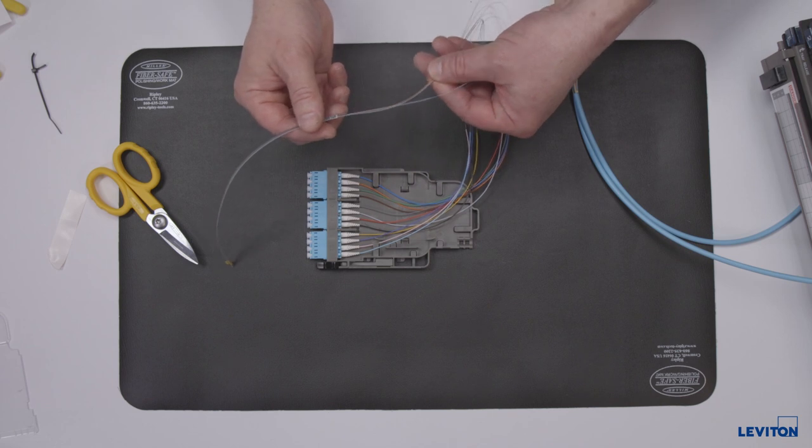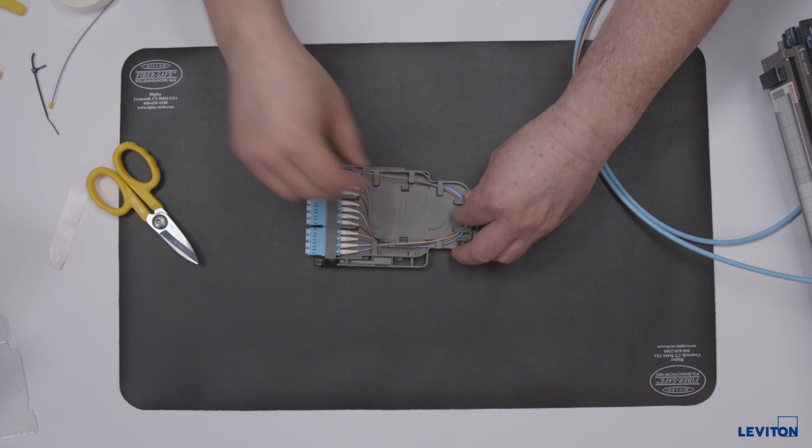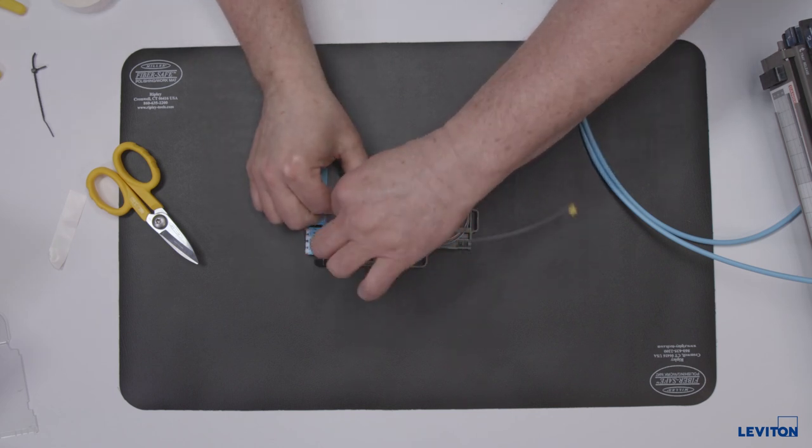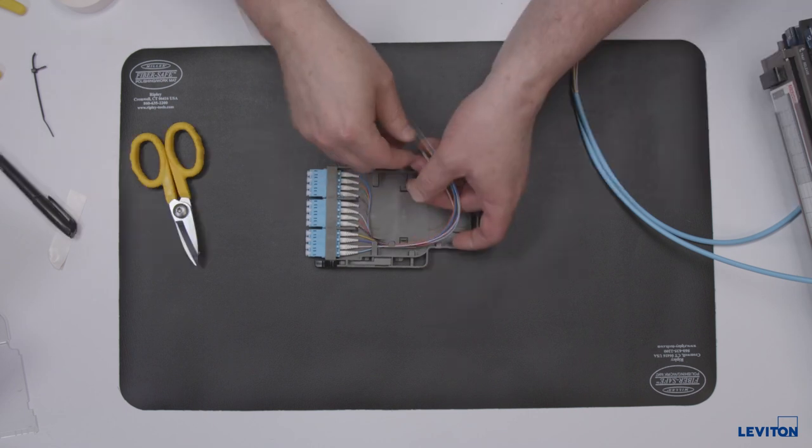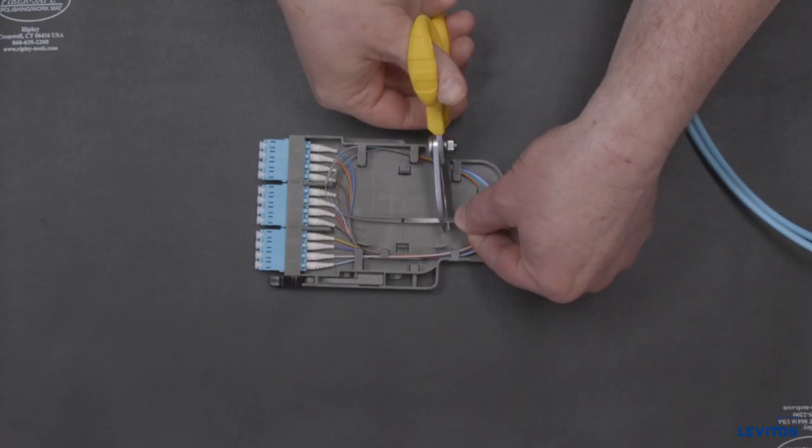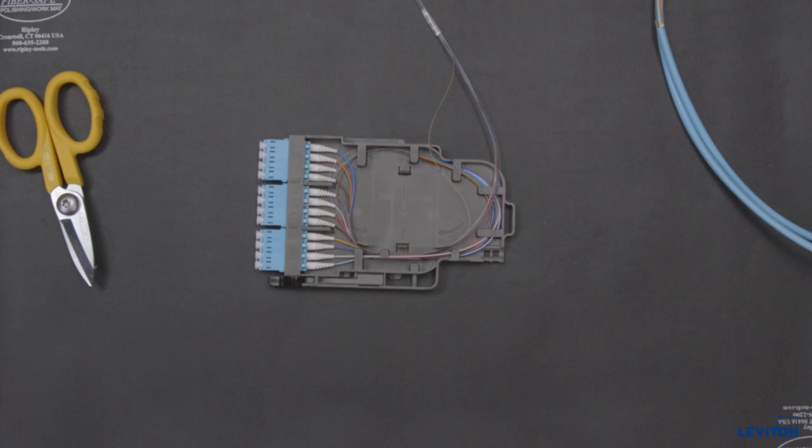If terminating to ribbon fiber, route the pigtail counterclockwise through the management tabs until all the slack is stored and the ribbon is entering the splice sleeve holder area. Mark the fiber at the zero mark guide and remove all fibers from the storage area. As an option, route the ribbon fiber through the splice sleeve holder area and cut at the far end of the holder insertion area.